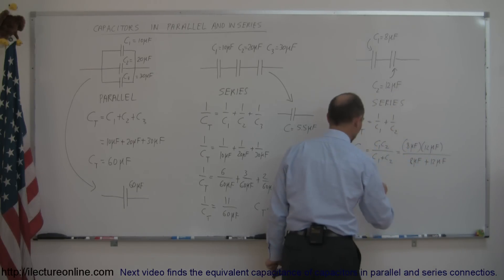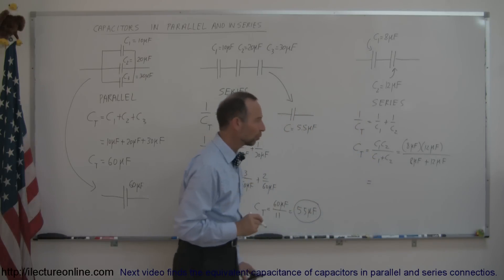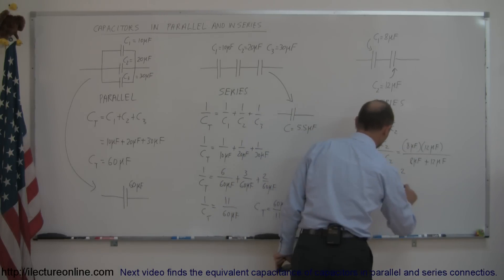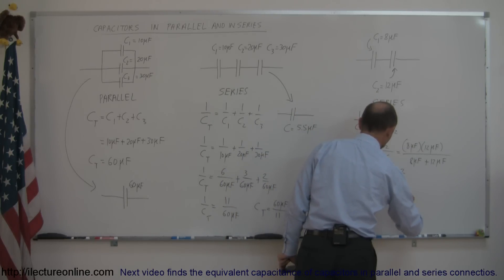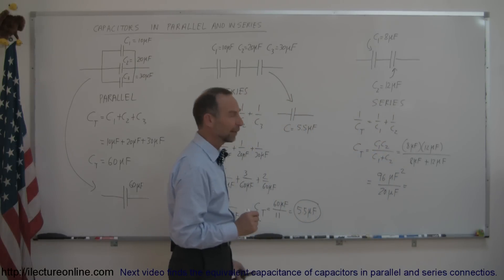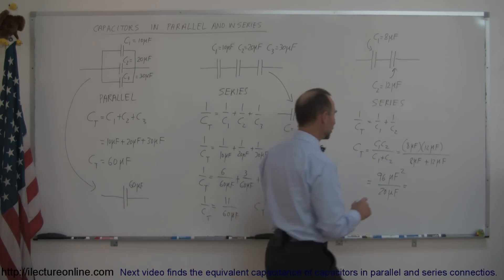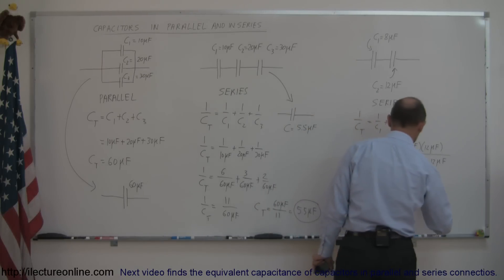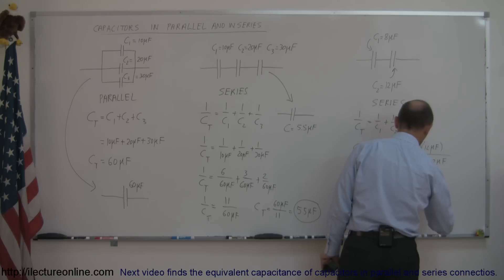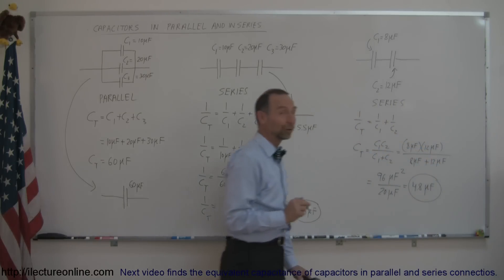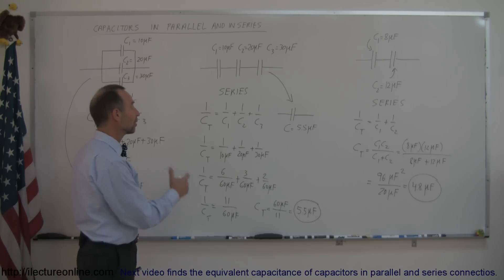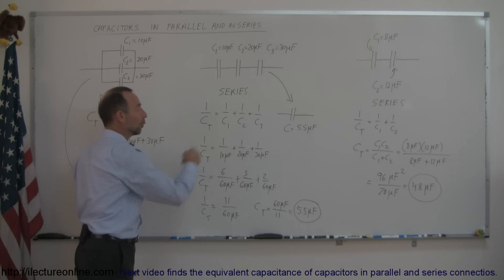Applying the product-over-sum equation to C1 = 8 µF and C2 = 12 µF: C_total = (8 × 12) / (8 + 12) = 96 / 20 = 4.8 microfarads. When there are only two capacitors in series, the product-over-sum equation is much easier to use. For three or more capacitors in series, use the full inverse-sum formula.